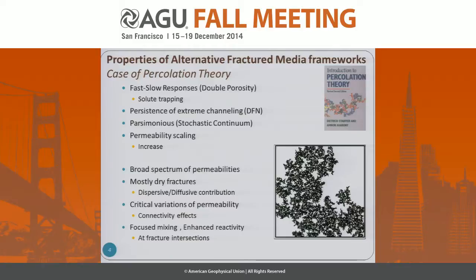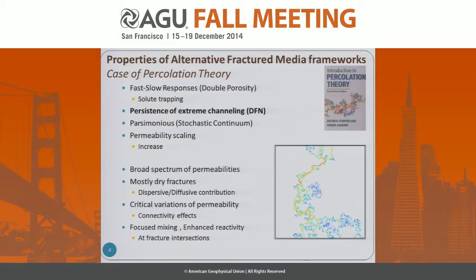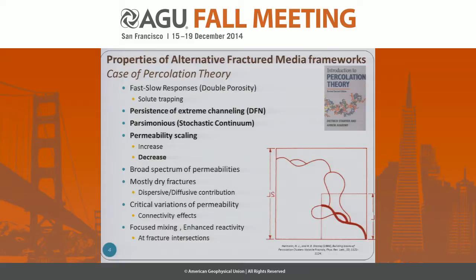One framework proposed early on is percolation theory, so we are going to look at what percolation theory respects. There is a persistence of extreme channeling, as shown here under this flow and the connected clusters, with a large distribution of flow values that are in fact a multi-fractal. It is parsimonious — there is only one parameter of fracture density. Permeability scaling is decreasing, and the reason is that this backbone structure is not really a fractal but what is called a volatile fractal, defined both by internal properties and boundary conditions, and most of the permeability decrease is a boundary effect.